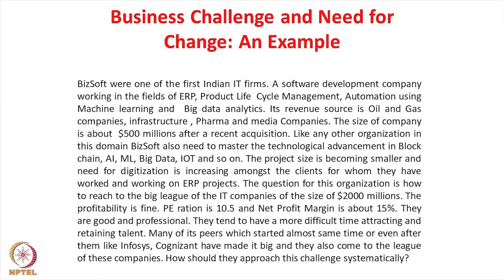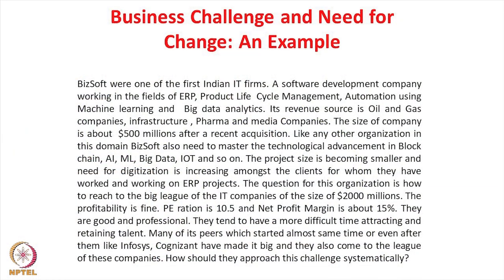The size of the projects this company is getting — like any other competitive company — is decreasing. The project size and duration involved are decreasing, though the number of projects can be more, centered around specific client needs. The need for digitization is increasing, particularly among clients they have worked with on ERP projects. The question for this organization is how to reach the big league of IT companies, say of the size of 2000 million dollars. The profitability is fine — PE ratio is 10.5, net profit margin is about 15 percent — and they are a good professional organization.